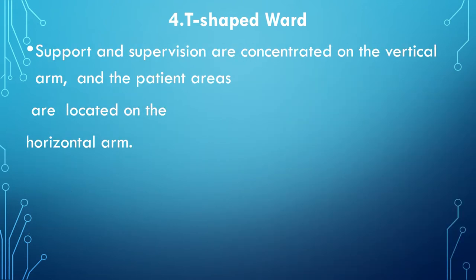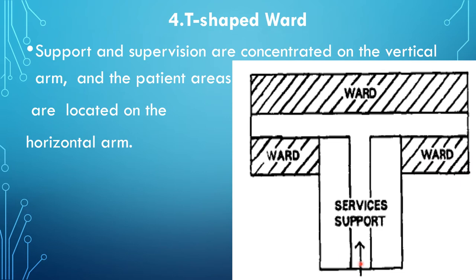The fourth type is the T-shaped ward. The support and supervision are concentrated at the vertical arm of the T, and the patient areas are located on the horizontal arm.